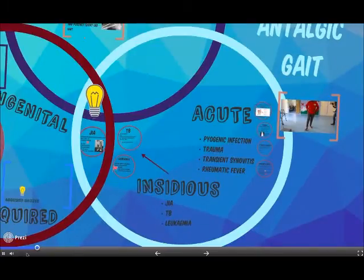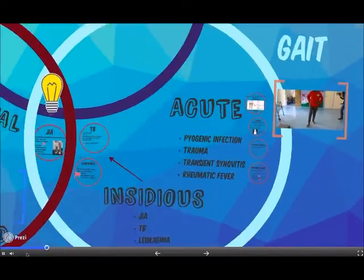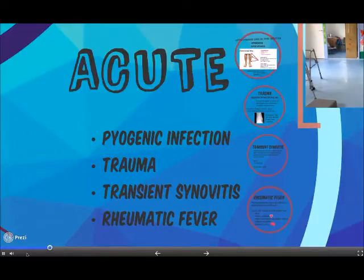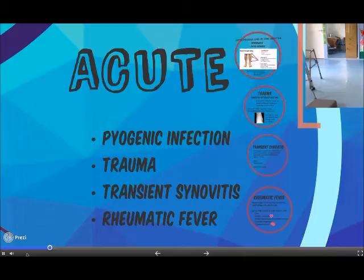History will reveal whether the limp is acute or insidious. The most concerning diagnosis to exclude with an acute limp is a pyogenic infection, which is an emergency due to the risk of septicemia and death, as well as permanent cartilage damage and chronic pain.